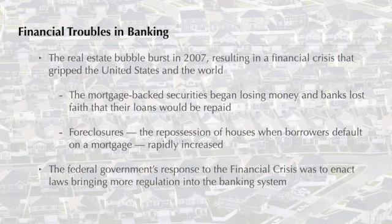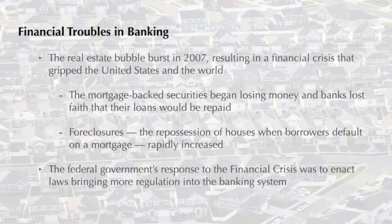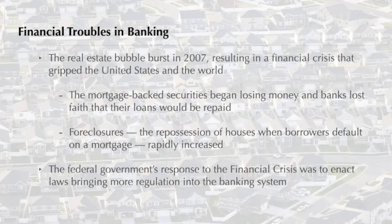In early 2007, the real estate bubble — which had been building as mortgage-backed securities caused housing market prices to increase — suddenly burst, causing a financial crisis that affected not only the United States but the world. The mortgage-backed securities began losing money, and banks worried that the home loans they had issued would not be repaid. Foreclosures — the repossession of a house when the mortgage borrower cannot pay the home loan back — increased. Many nationally known banks failed. In 2008, the federal government bailed out some banks deemed too big to fail, and Congress passed several pieces of legislation that increased regulation of the banking system.